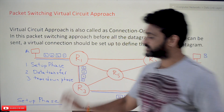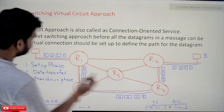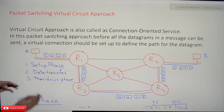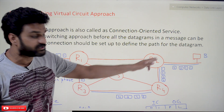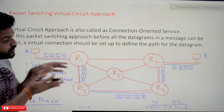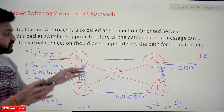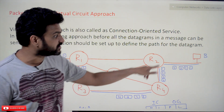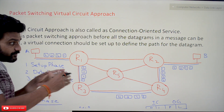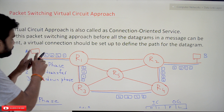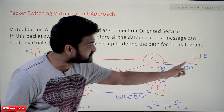Let's try to understand this using a diagram. We have four packets. First, the circuit gets established. A is trying to transfer data to B, so the virtual circuit has to be established. That virtual circuit is based upon the shortest path. How the shortest path is identified we will understand in later videos. Assuming this is the shortest path, a virtual circuit between A and B will get established.